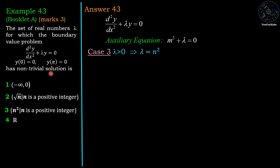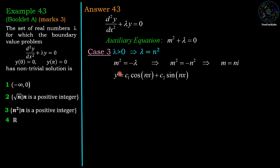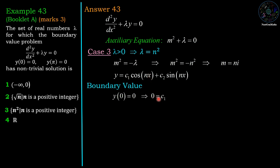Case 3: λ > 0, so λ = n² for any real number n. The auxiliary equation gives m² = −λ = −n², so m = ±ni — complex roots. The corresponding solution is y = c₁cos(nx) + c₂sin(nx). Applying the first boundary condition y(0) = 0: since cos(0) = 1 and sin(0) = 0, we get c₁ = 0.